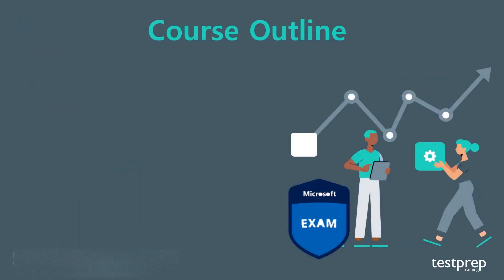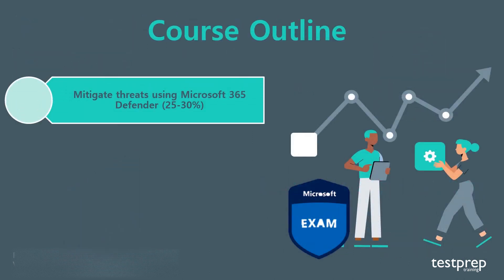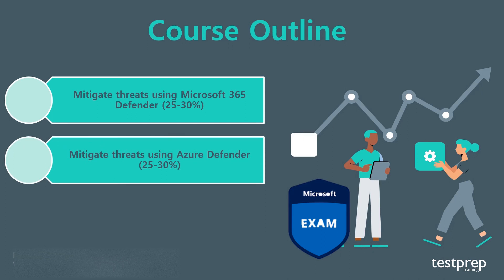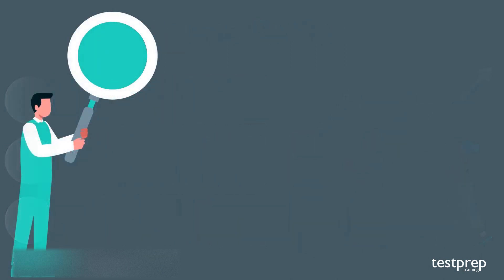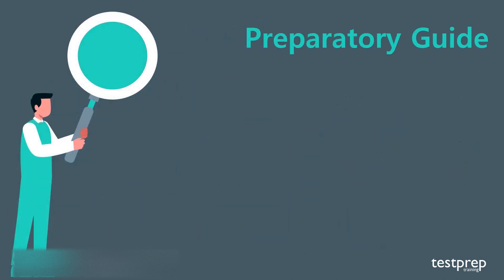Course outline: first, mitigate threats using Microsoft 365 Defender, which comprises 25 to 30 percent of the exam weightage. Second, mitigate threats using Azure Sentinel, which comprises 40 to 45 percent of the exam weightage.